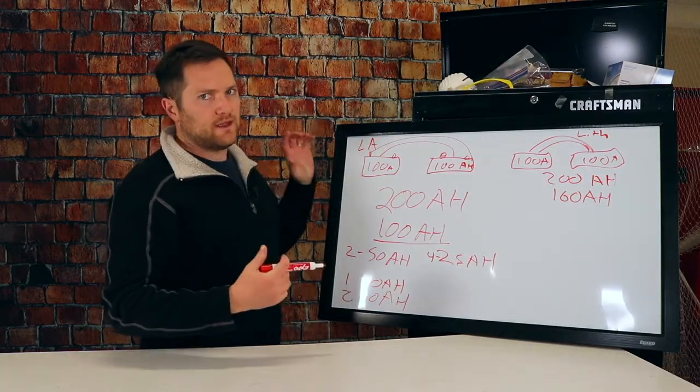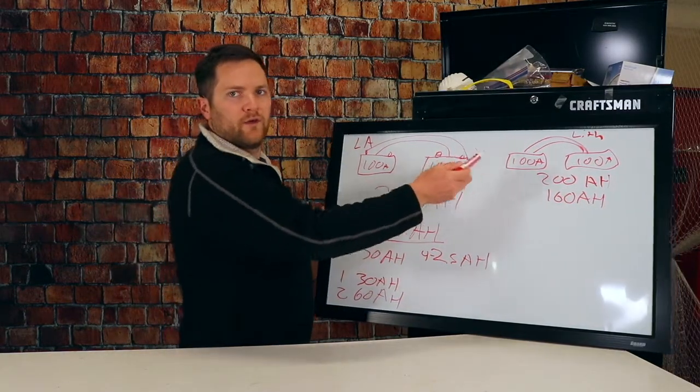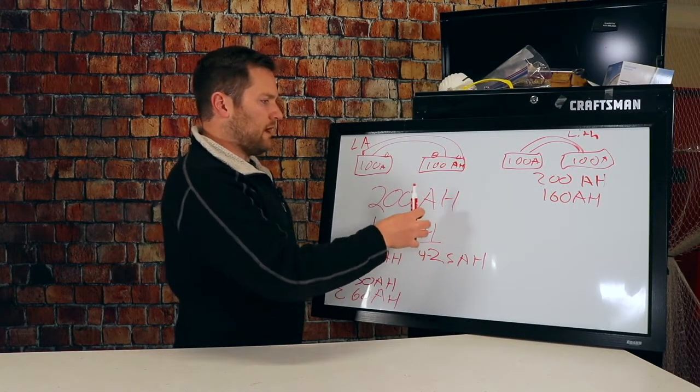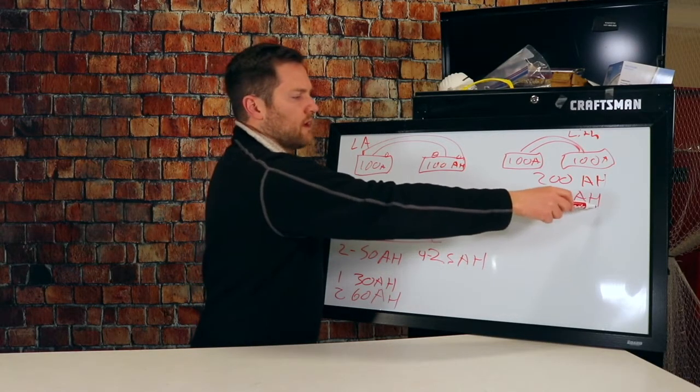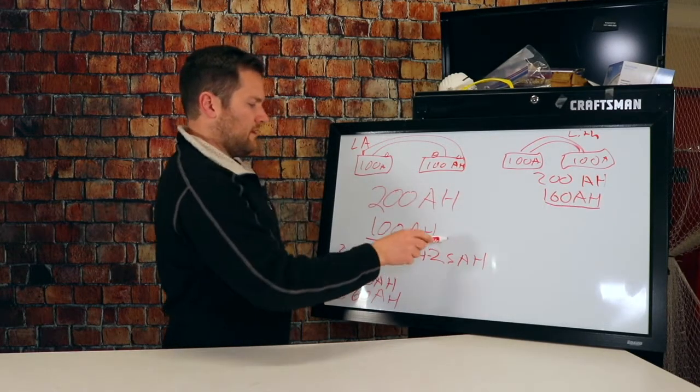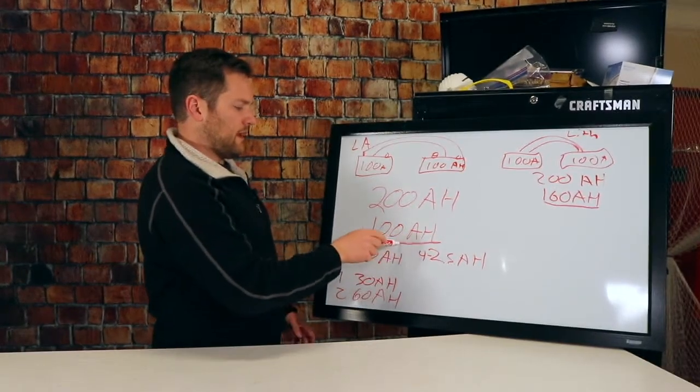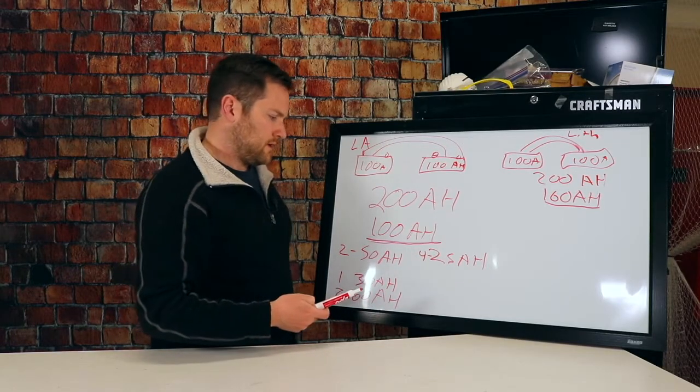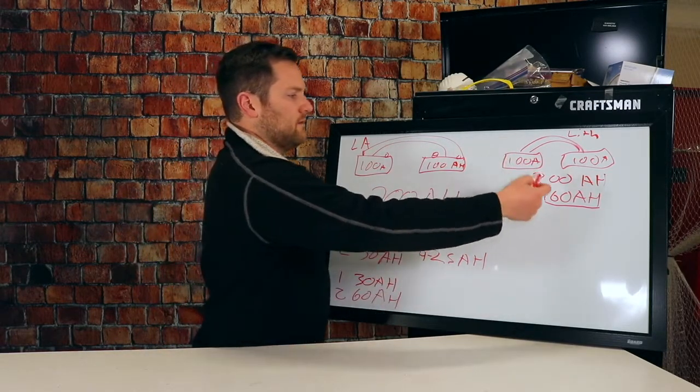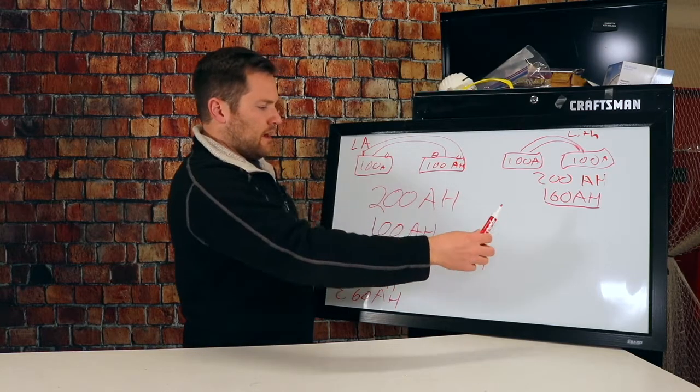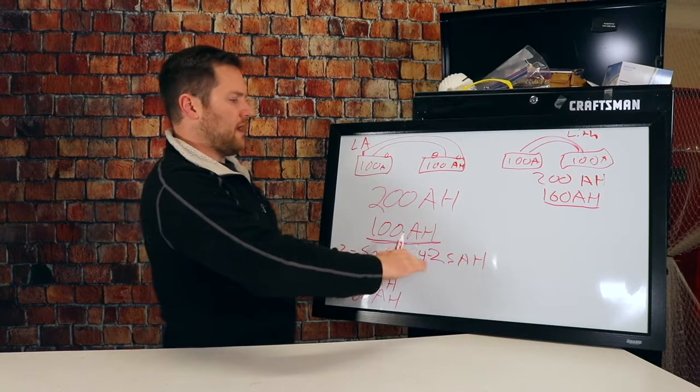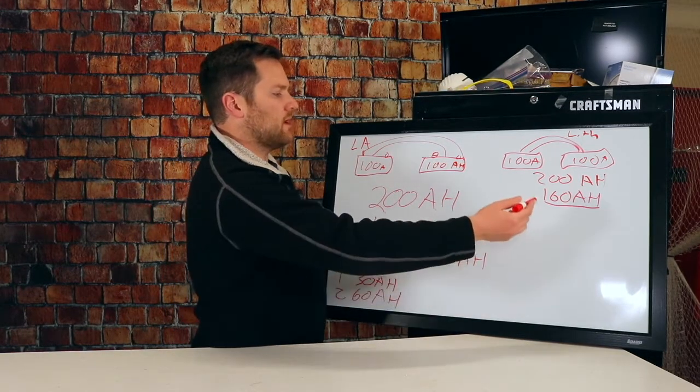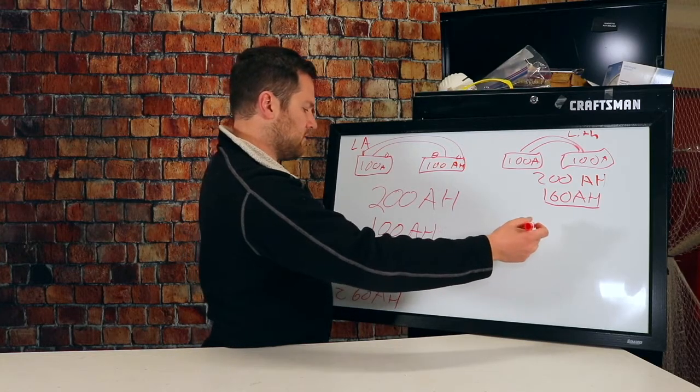So the same, if you're looking at the same battery for lead acid versus lithium, 100 amp hour batteries, two of them, you have a lot more energy that you can get out of lithium than you can with your lead acid. You have 60 more amp hours that you could draw out. So when you're looking at this situation, you need to replenish the same amount of power, but you can go longer without replenishing.